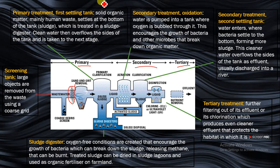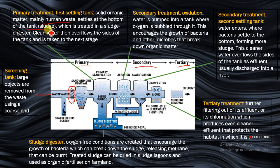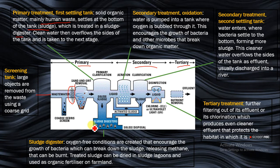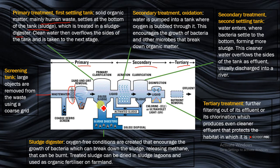From there, you move to the primary treatment, which is the first settling tank. What happens here is that solid organic matter — mainly human waste — settles at the bottom of the tank. This is coagulation still taking place, and the settled matter is treated in a sludge digester. Clean water then overflows the side of the tank and is taken to the next stage.